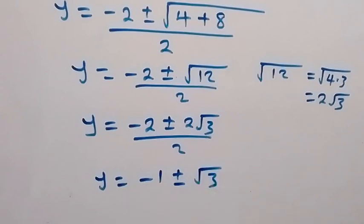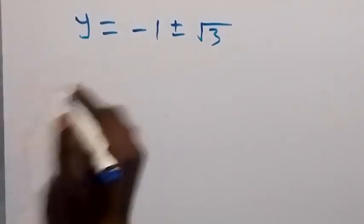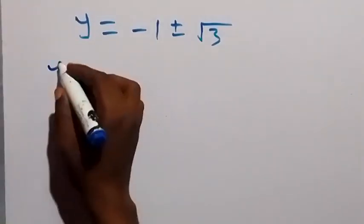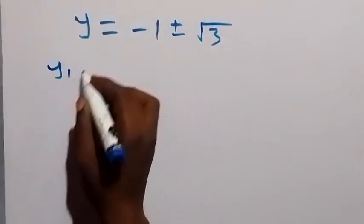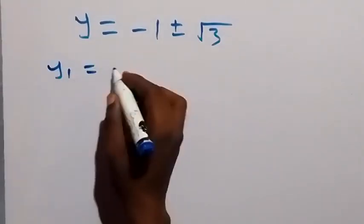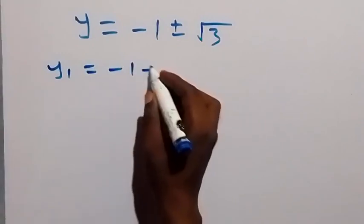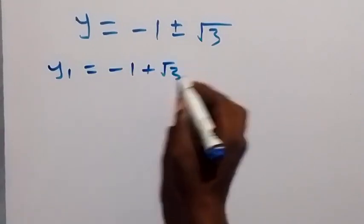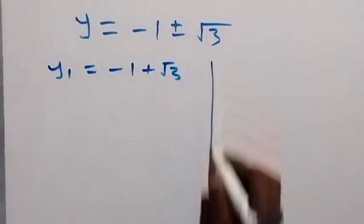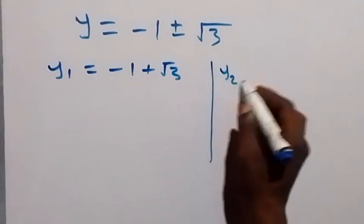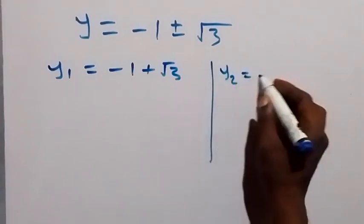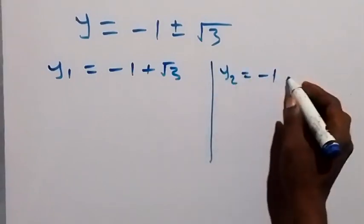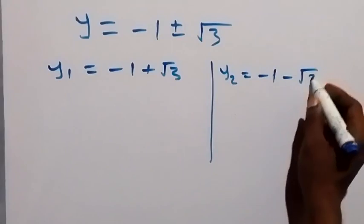So we have two values of y. We say let y1 equal to minus 1 plus root 3, and y2 equal to minus 1 minus root 3.